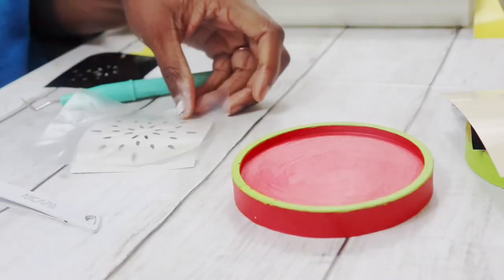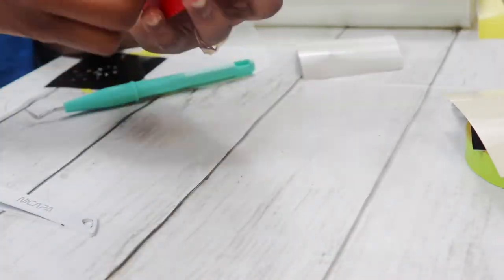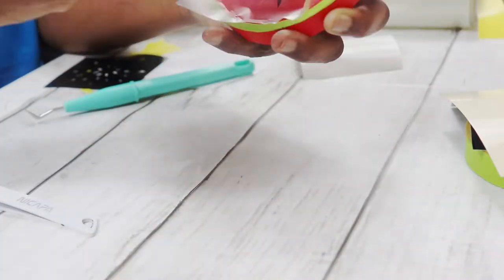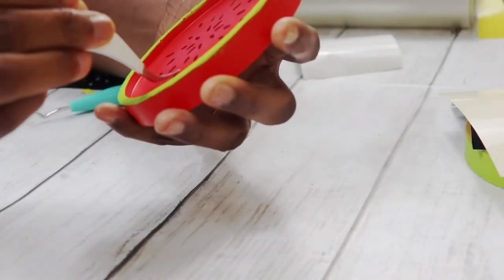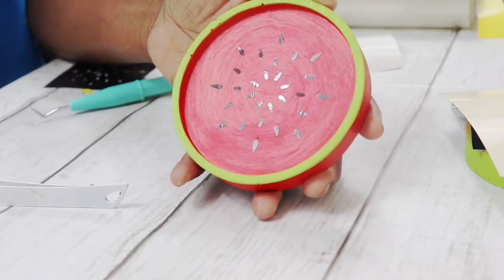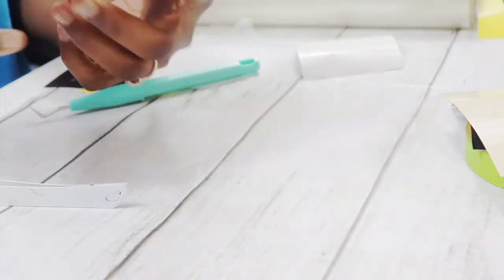But that can also be a separate tutorial if needed or if requested as well. And here it is looking like a whole watermelon. Just getting some speckles off that and I really like it.